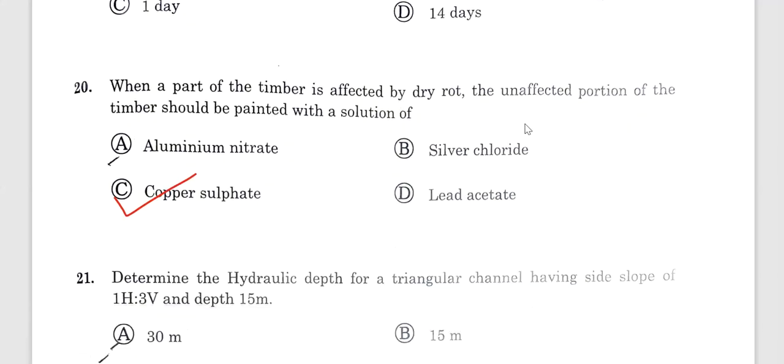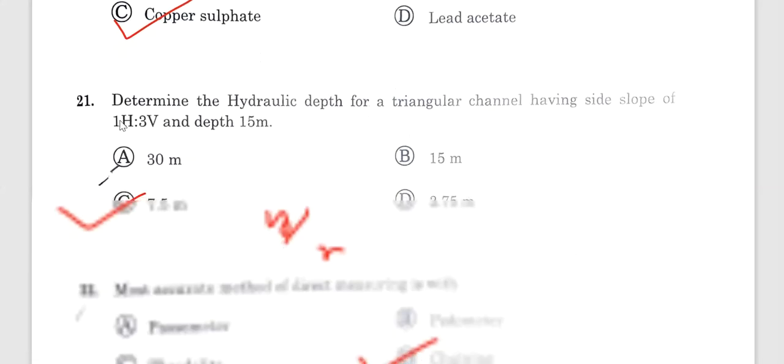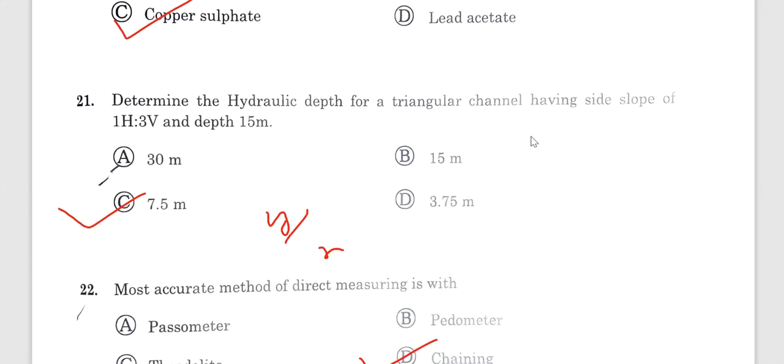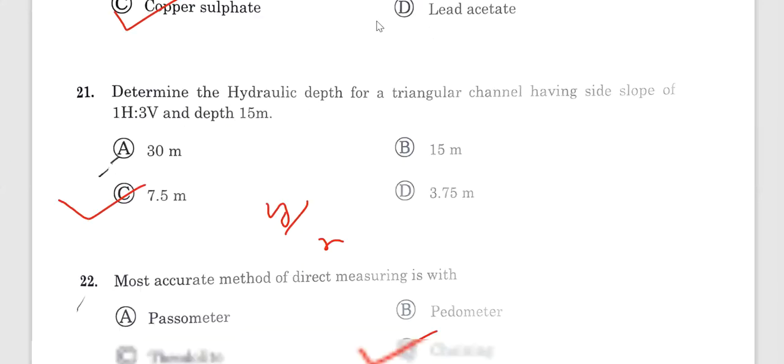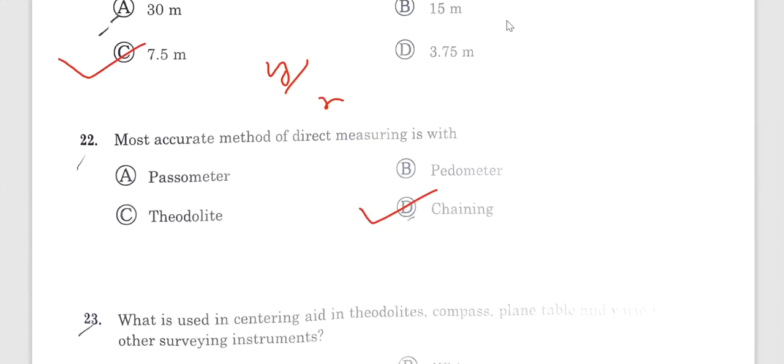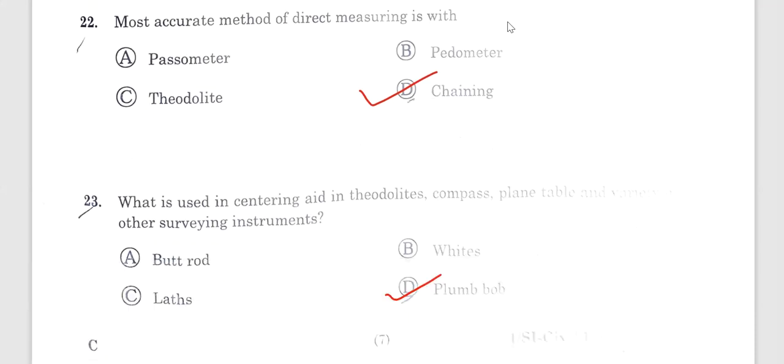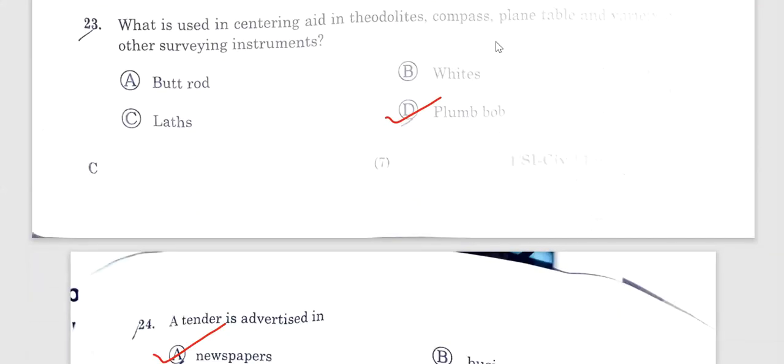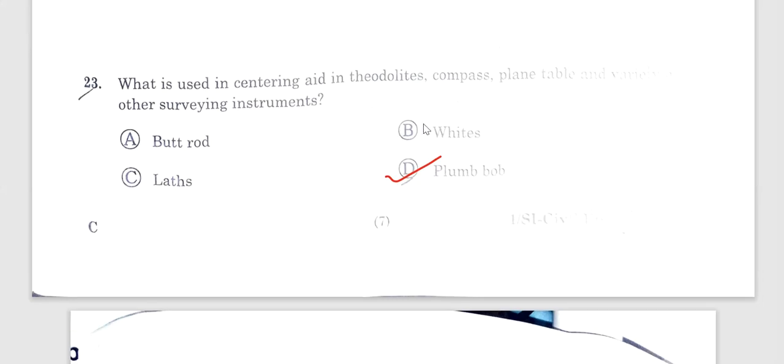Question number 20. When a part of timber is affected by dry rot, the unaffected portions of the timber should be painted with a solution of copper sulfate. Question 21. Hydraulic depth triangular section. Hydraulic depth is nothing but depth divided by 2. Question number 22. Most accurate method for direct measuring horizontal angle and vertical angle measurement is theodolite. Question number 23. What is used in centering in theodolites, compass, plane tables? Mainly centering is used with plumb bob.